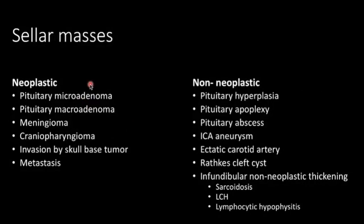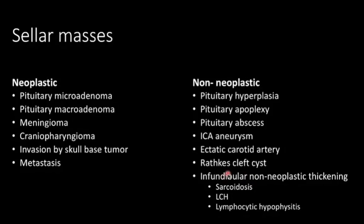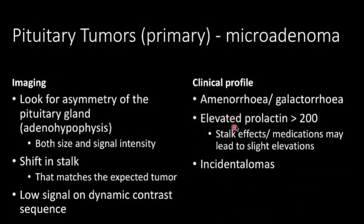To recap: sellar and suprasellar masses include typical masses such as microadenomas, macroadenomas, meningiomas, craniopharyngiomas, or invasion by skull base tumors and metastases. Mass-like lesions may also be non-neoplastic — for example pituitary hyperplasia, apoplexy, pituitary abscess, aneurysms, Rathke's cleft cyst, or infundibular thickening from eosinophilic granuloma, Langerhans cell histiocytosis, or sarcoidosis.